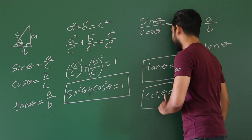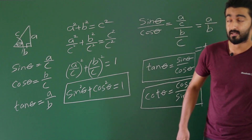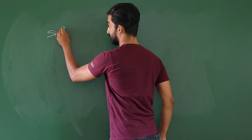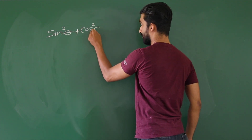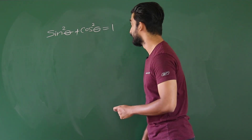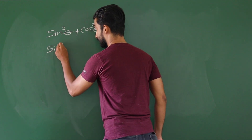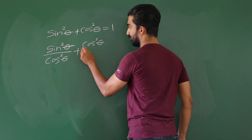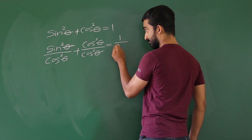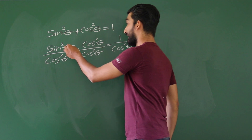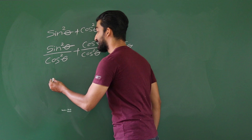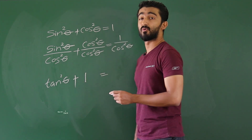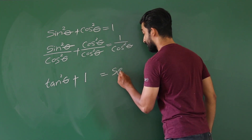Using these trigonometric identities, we can derive another two basic trigonometric identities. Previously we proved sin²θ + cos²θ = 1. Now we divide this identity by cos²θ. sin²θ/cos²θ = tan²θ, since sin θ/cos θ is tan theta. cos²θ divided by cos²θ is 1. And 1 over cos theta means sec theta, so 1/cos²θ means sec²θ.